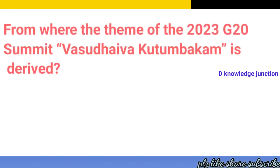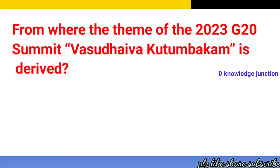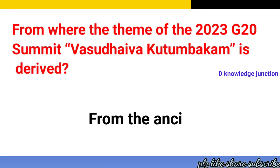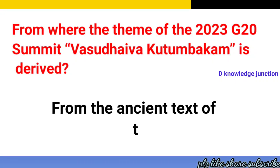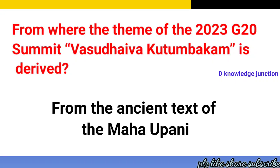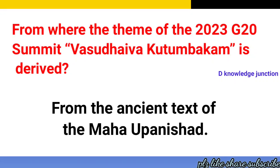From where is the theme of the 2023 G20 summit 'Vasudhaiva Kutumbakam' derived? The correct answer is from the ancient text of the Maha Upanishad.